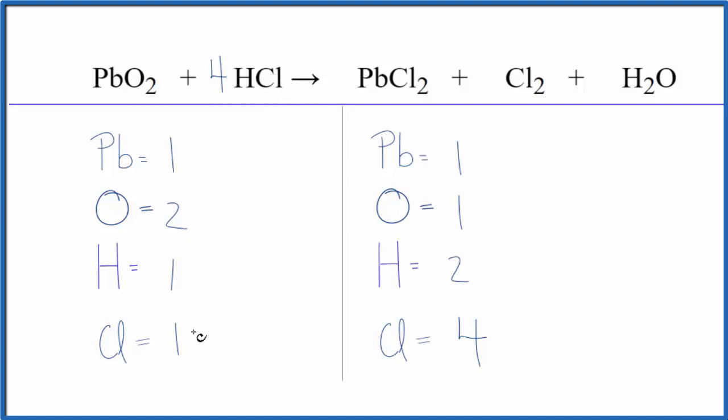So one times four that'll give me four of the chlorine atoms and then one times four that'll give me four hydrogen atoms. All right let's balance the hydrogens. Let's just put a two in front of the H2O. Now we have two times two that equals four hydrogens. One times two that equals two oxygens and that's it.